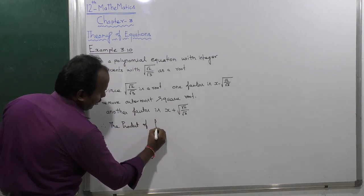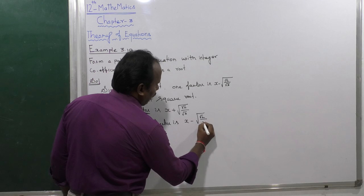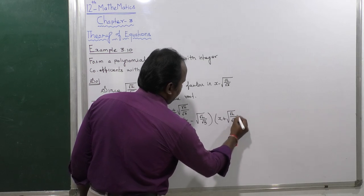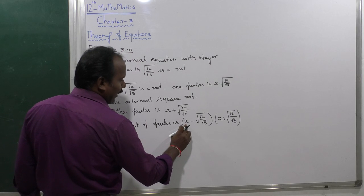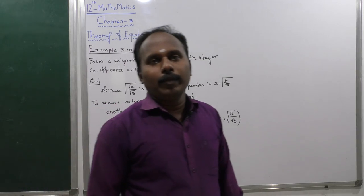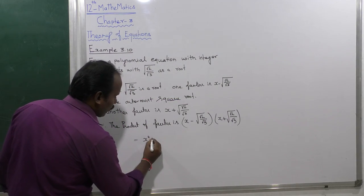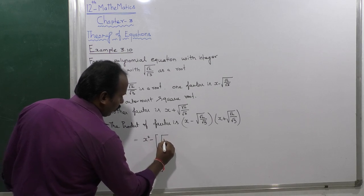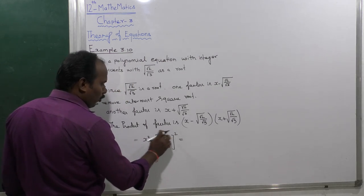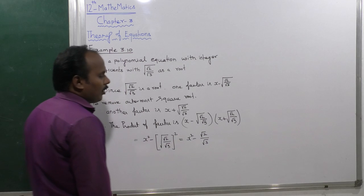The product of factors: (x minus root of root 2 divided by root 3) times (x plus root of root 2 divided by root 3). Using the identity (a+b)(a-b), this equals x squared minus (root 2 divided by root 3). So the first equation is x squared minus root 2 divided by root 3. But we have not yet reached our goal.